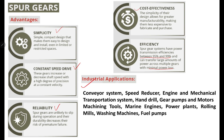Industrial applications of spur gears: they are used in conveyor systems in material handling, as speed reducers, in engine and mechanical transportation systems, hand drills, gear pumps and motors, machining tools, marine engines, power plants, rolling mills, washing machines, and fuel pumps.